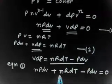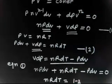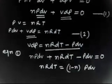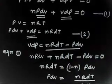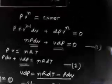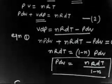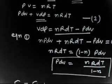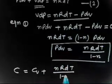Rearranging, we get n·R·dT equals (1 minus n)·p·dV. Therefore p·dV equals n·R·dT divided by (1 minus n). Now we have p·dV expressed as a function of dT. Substituting into C equals Cv plus p·dV divided by n·dT: the n and dT cancel, giving C equals Cv plus R divided by (1 minus n).